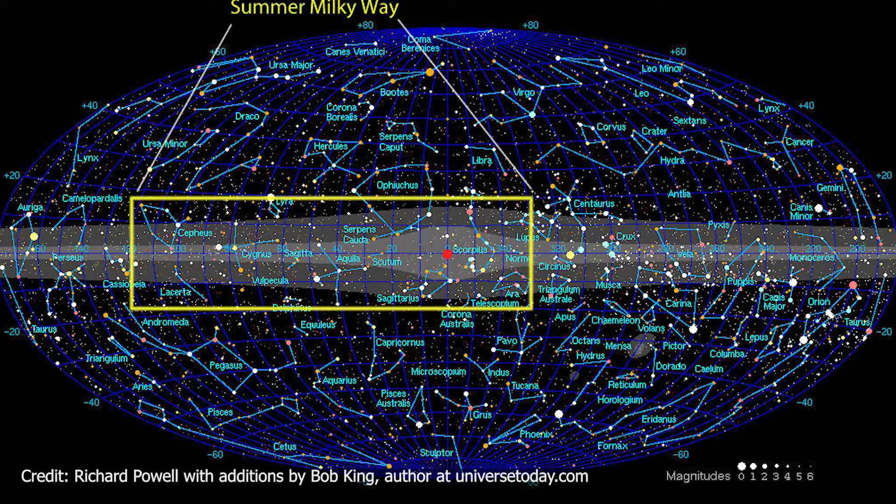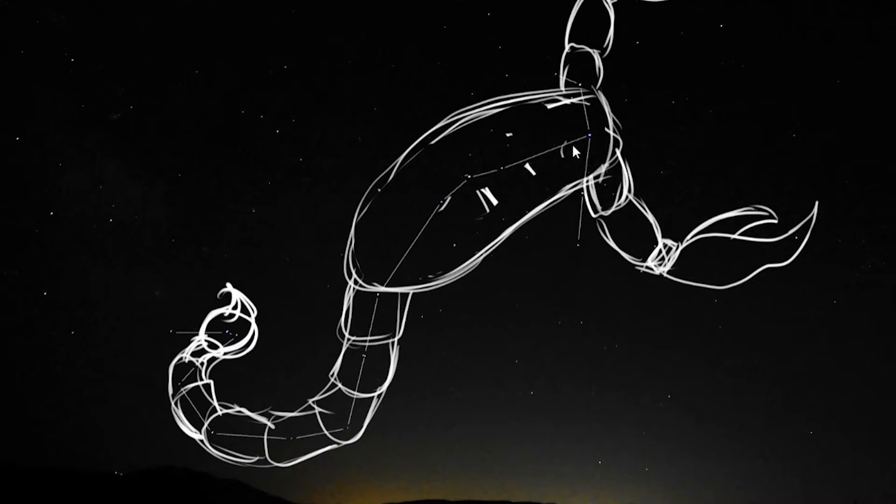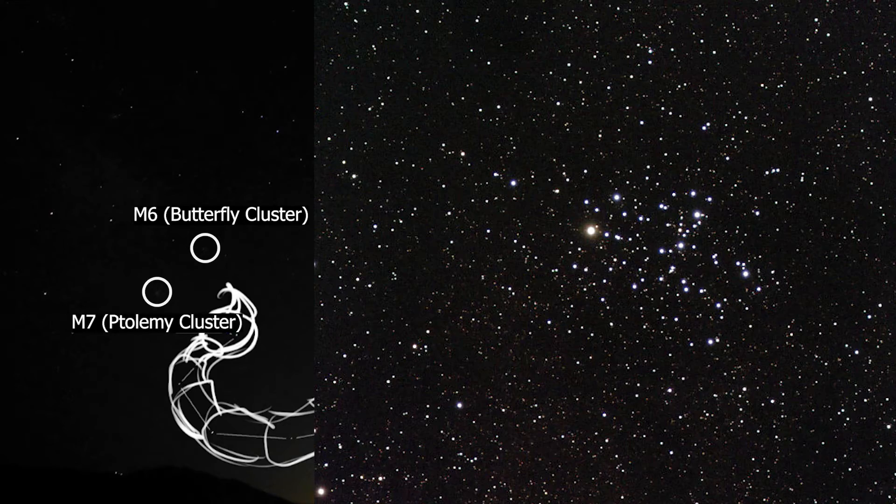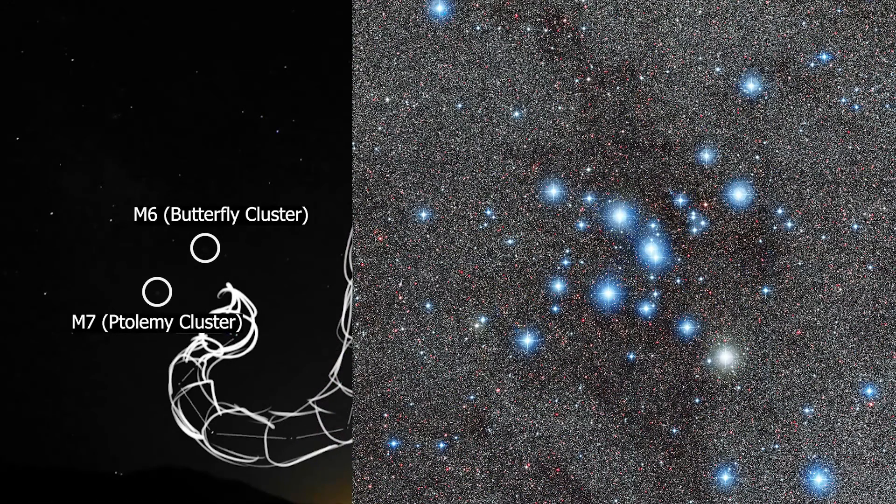Scorpius sits near the center of the Milky Way, where there are a lot of deep sky objects to look for, but I will just name a few. There are two noteworthy star clusters near Scorpius' stinger, M6, also known as the Butterfly Cluster, and M7, also known as the Ptolemy Cluster.